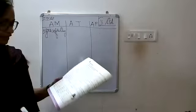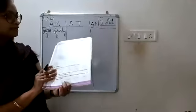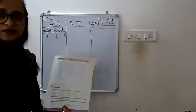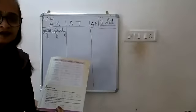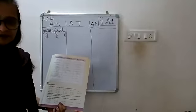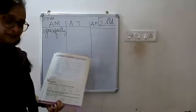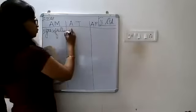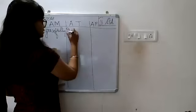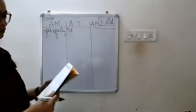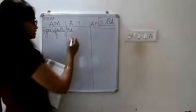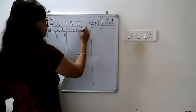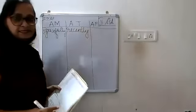The second word is 'recently.' Which column? Time — very good. Under the adverbs of time column, write 'recently' — R-E-C-E-N-T-L-Y.